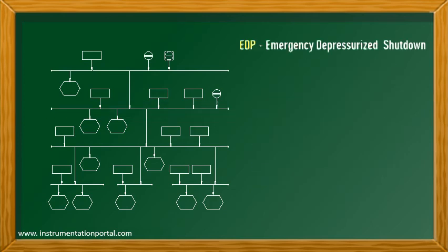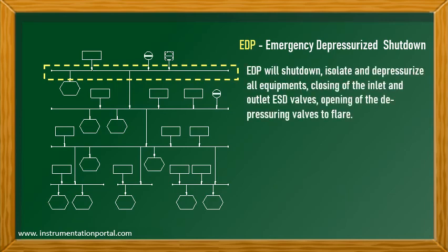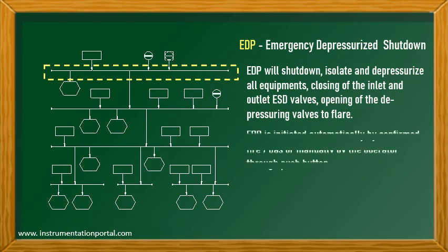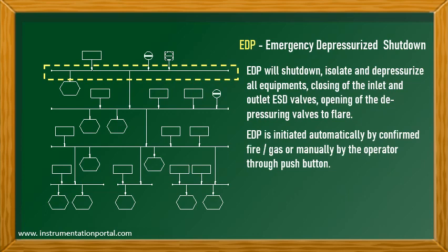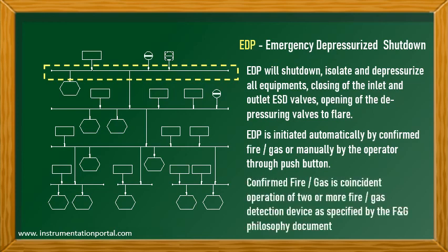The highest level is EDP, or emergency depressurize. EDP will shut down, isolate, and depressurize all equipment, and open the depressurizing valve — usually named BDV or blow-down valve — to flare. EDP is initiated automatically if there is detection of fire or gas leak in the facilities. This can be triggered by confirmed fire or gas, which is a coincident detection of two or more fire or gas detectors.